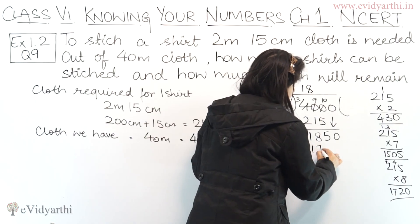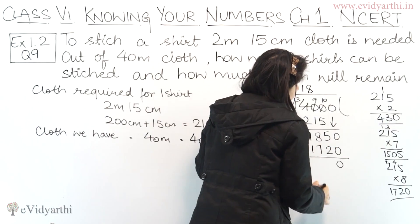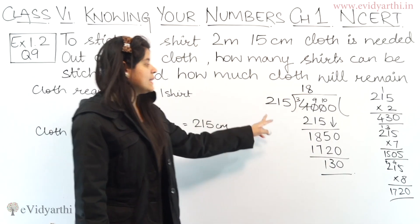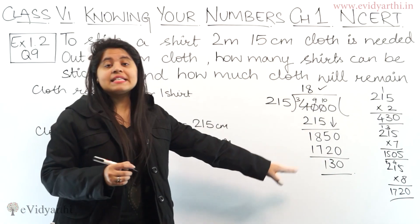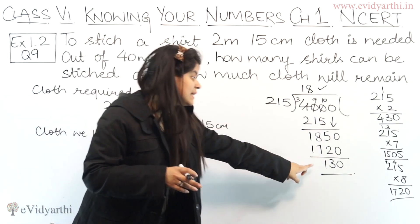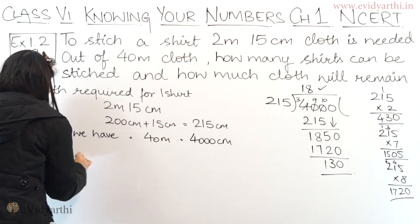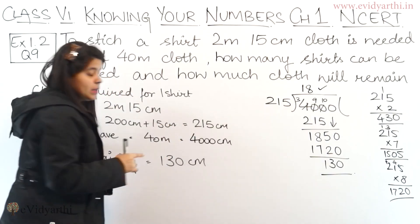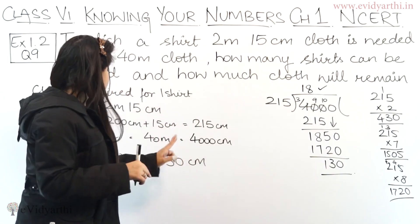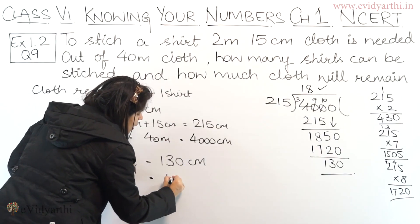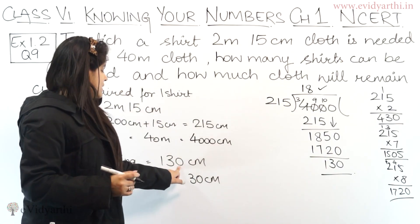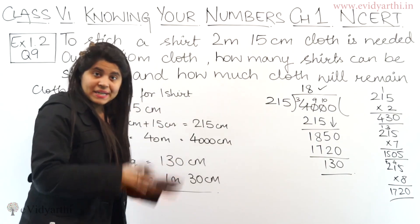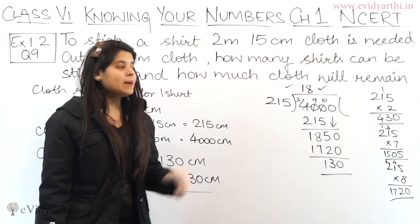From 1720: zero minus zero is zero, then five minus two is three, then eight minus seven is one, and this will be zero. So we found that 18 shirts can be made. The remainder — the cloth remaining — is 130cm. Since we converted everything to centimeters, 130 centimeters can be written as 1 meter and 30 centimeters, because 100 centimeters equals 1 meter. So 1 meter 30 centimeters of cloth will remain, and 18 shirts will be made.